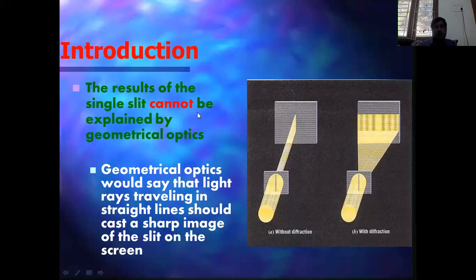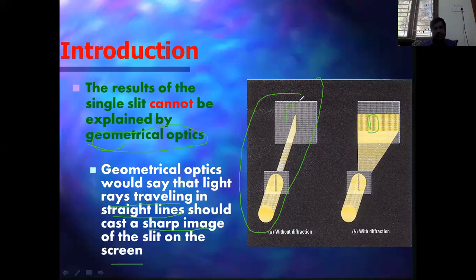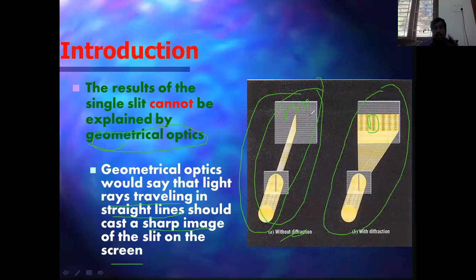The results of single slit diffraction cannot be explained by geometrical optics alone. Geometrical optics says light travels in a straight line and should cast a sharp image of the slit on the screen. But with diffraction, you get a spread pattern. Without diffraction: sharp image; with diffraction: spread bright and dark fringe pattern. The pattern depends upon the size of the slit.